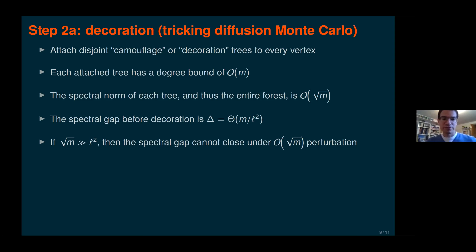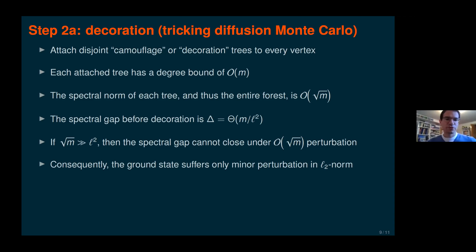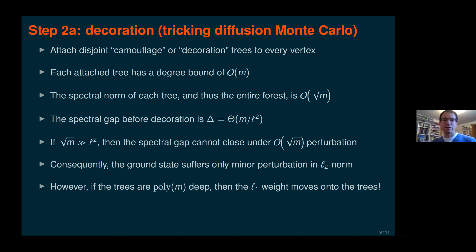If √m is much larger than L², the spectral gap cannot close under this perturbation of order √m — so we just choose parameters to satisfy this. Because we choose the ratio of m and L satisfying this condition, the ground state suffers only a minor perturbation in terms of L2 norm. However, if the trees we add are at least polynomially deep in m, then the L1 weight in the ground state moves into the trees. Looking at the ground state with an L2 lens shows minor differences, but with an L1 lens most weight is transferred to the trees.